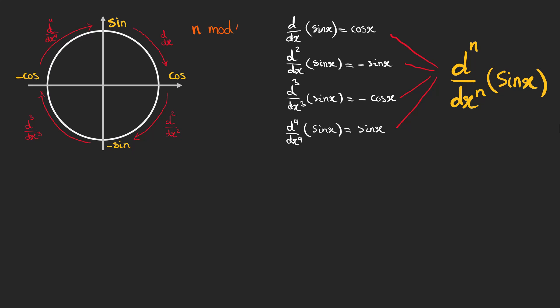If the remainder of n divided by 4 is 1, the answer is cosine x. If the remainder is 2, the answer would be minus sine x. We have minus cosine x for the remainder 3, and sine x for the remainder 0. For example, 28 is divisible by 4, and so the answer is sine x.